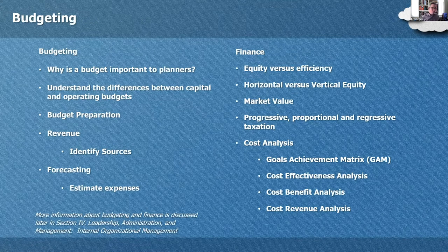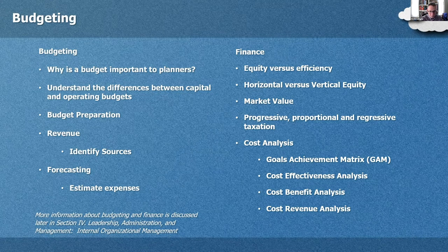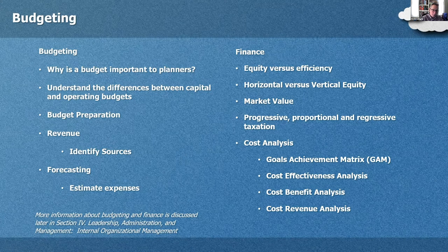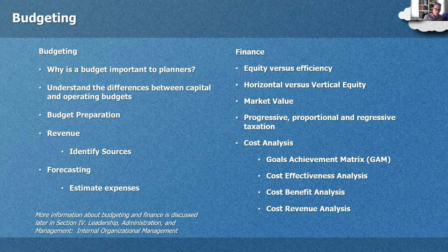We need to know why budgeting is important to planners, understand the difference between a capital budget and an operating budget, how a planner prepares a budget, what revenue sources are, and how to forecast future spending and estimate expenses. For finance, know equity financing versus efficiency financing, horizontal equity versus vertical equity, market value, progressive tax, proportional tax, and regressive tax. Also know the different ways of looking at cost analysis: a goals achievement matrix, cost-effective analysis, cost-benefit analysis, and cost-revenue analysis — four different ways to explore costs.